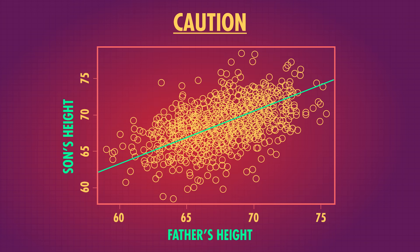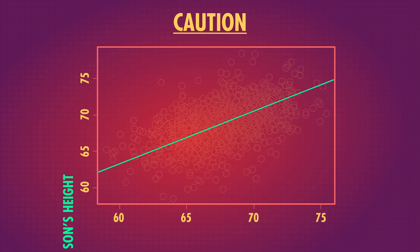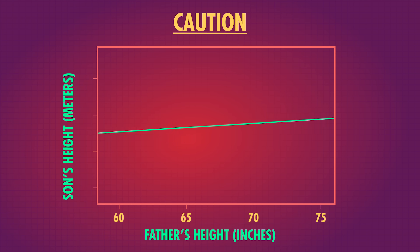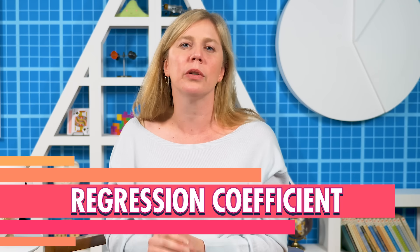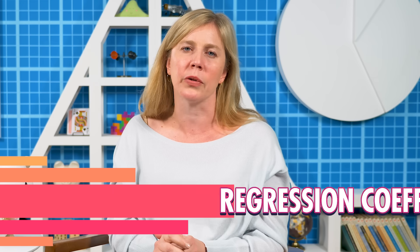One note of caution: the slope relies heavily on the units of x and y, since it's a measure of how many units y increases with each increase of one unit in x. If you decided to measure the son's height in meters, the m or slope will change, even though the relationship didn't. When we see a non-zero slope, also called a regression coefficient, it's a sign that there's some kind of relationship between our two variables. But that's pretty much all it tells us — we don't know how strong that relationship is. For more information, we need to look at correlation.